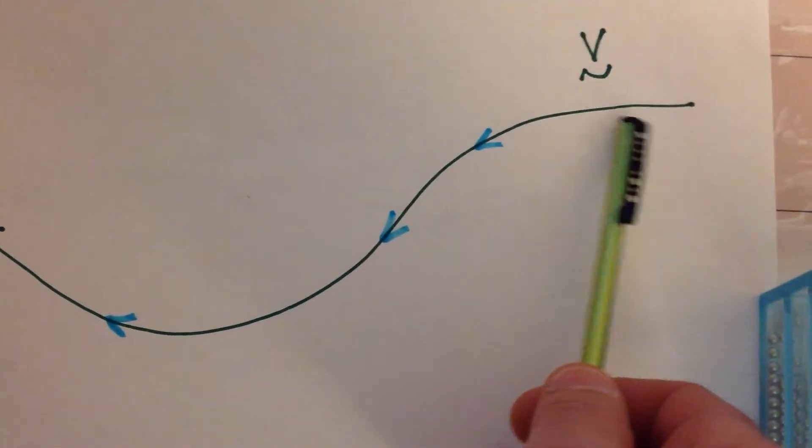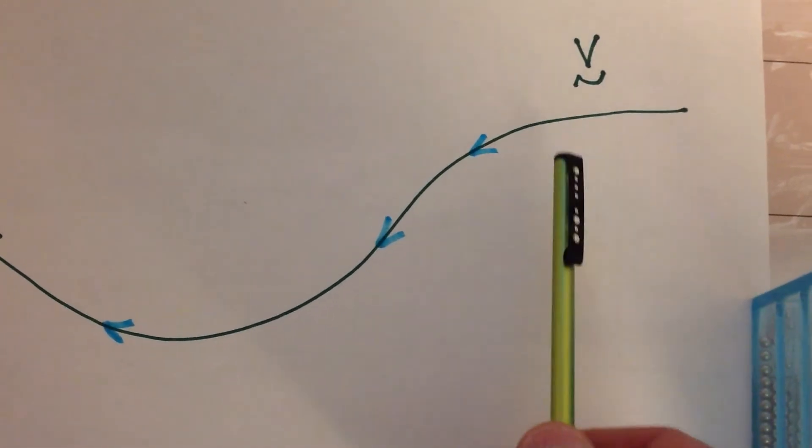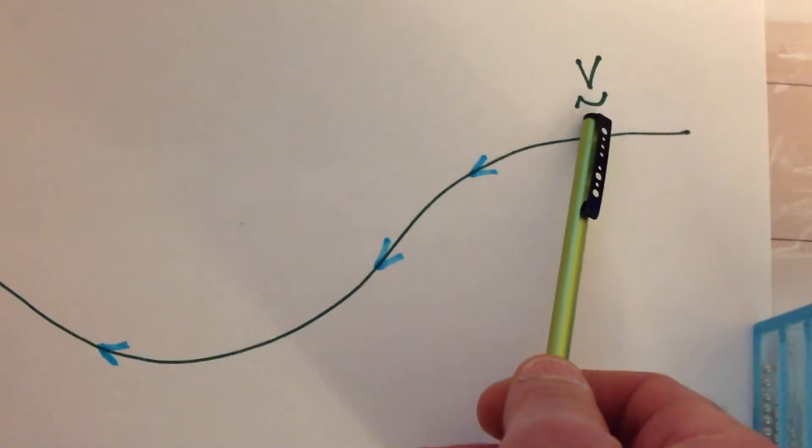So what I'm showing here is this could be a convective current in the system that's given by some velocity profile, V vector.